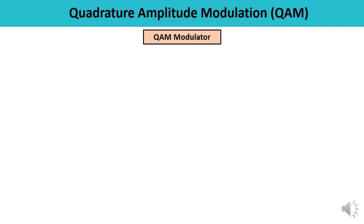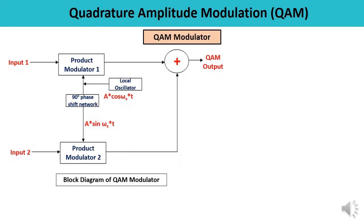Now let us discuss the QAM modulator. This is the block diagram of the QAM modulator or transmitter. Here you can observe there are two inputs, as discussed — it is capable of combining two amplitude modulated waves into a single channel. So the number of inputs are two: input one and input two. Two product modulators, product modulator one and product modulator two, have been used in this particular case.